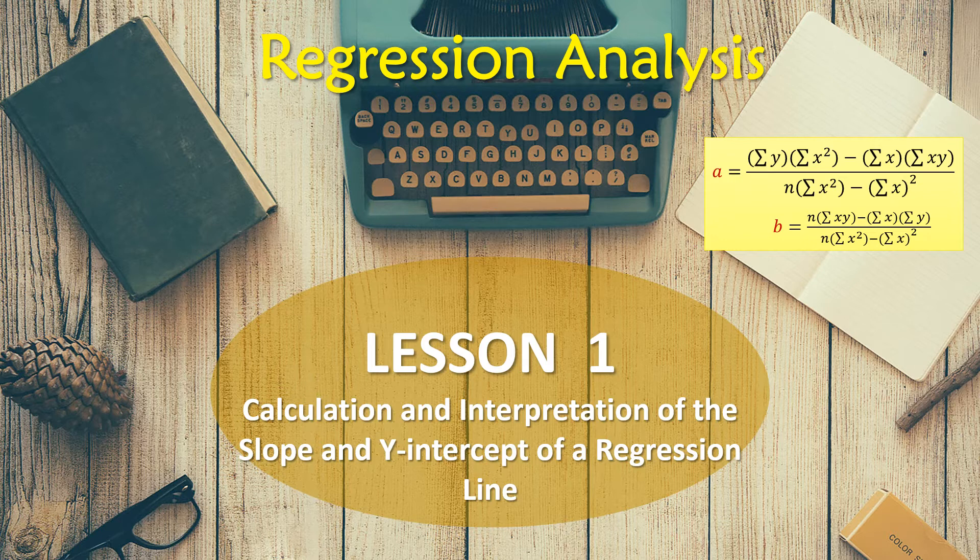The correlation coefficient, the Pearson's product moment correlation coefficient, is a numerical measure of the linear relationship between two variables, usually labeled x and y. While in regression the emphasis is on predicting one variable from the other, in correlation the emphasis is on the degree to which a linear model may describe the relationship between the two variables.